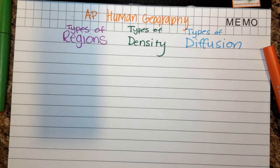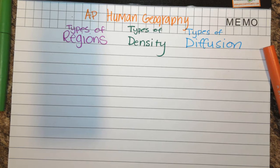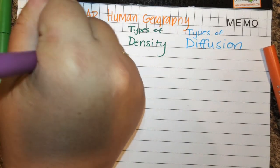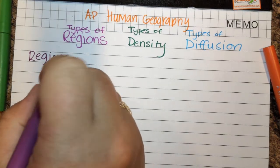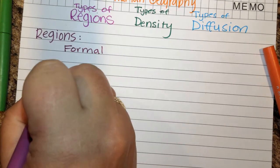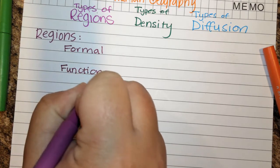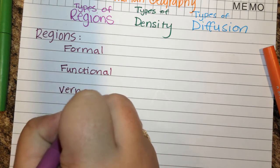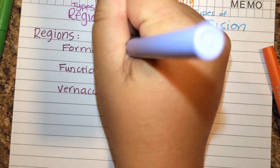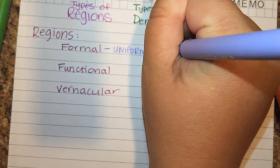The first thing we're going to look at is different types of regions. For our purposes, there are really three specific types: formal, functional, and vernacular. A formal region can also be known as a uniform region or homogeneous region.